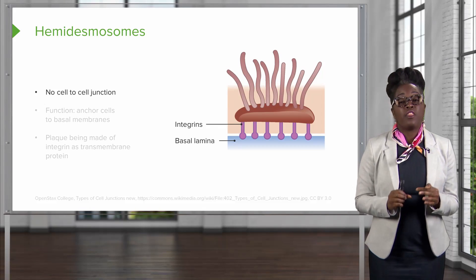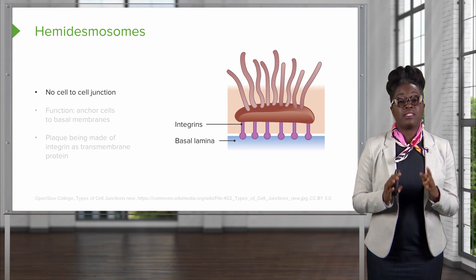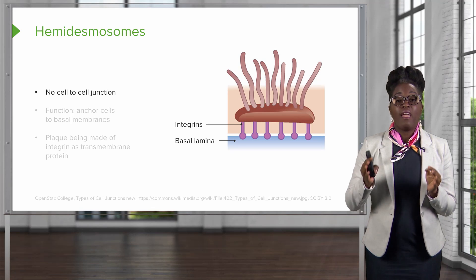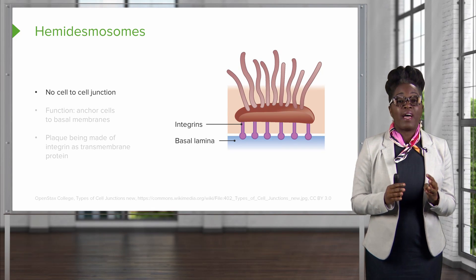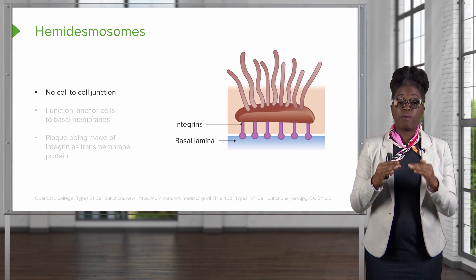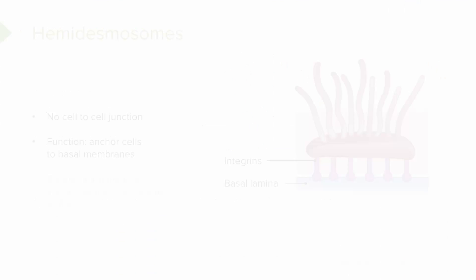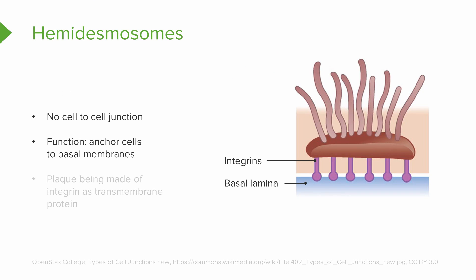Here's another type of junction protein, but it is important to be clear that this is not a cell-to-cell junction. Instead, cells that are anchored to a basement membrane use junctions called hemidesmosomes. Hemidesmosomes anchor cells to a basement membrane using a plaque, but instead of catherin as the transmembrane protein, the transmembrane protein is actually integrin.